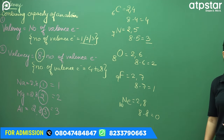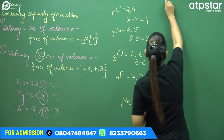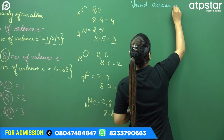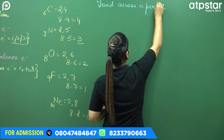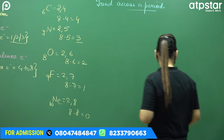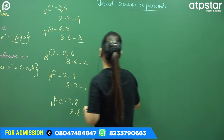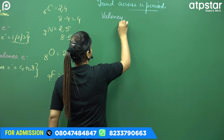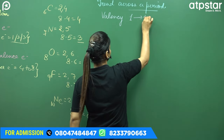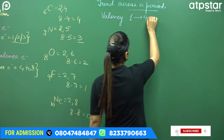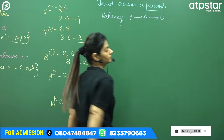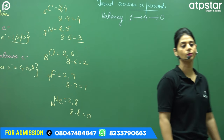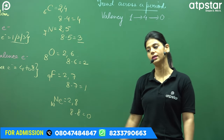Now let's see the trend of valency. Trend across a period — when we go from left to right in a period, the valency first increases from 1 to 4, and then decreases from 4 to 0. This is the trend: 1 increases to 4, then 4 decreases to 0.